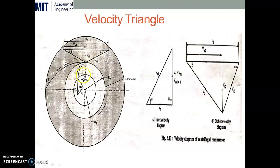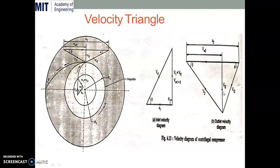We can consider over here, this is the impeller vanes and this is the diffuser vanes. As per the basic concept of the velocity triangle in turbo machine, we have to draw the velocity triangle across the impeller vanes at inlet and outlet. At the inlet side, it is called the inlet velocity triangle, and at the outlet side, it is called the outlet velocity triangle. A similar diagram is shown here.